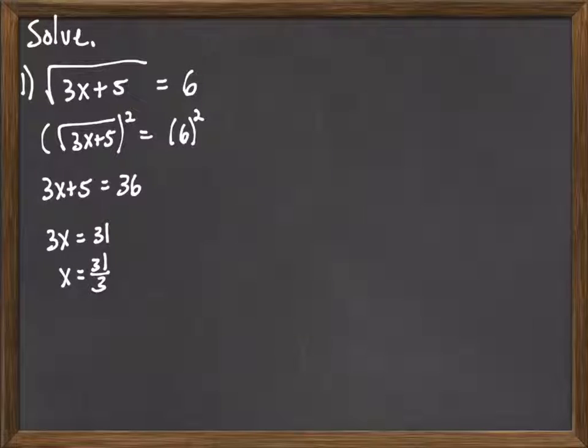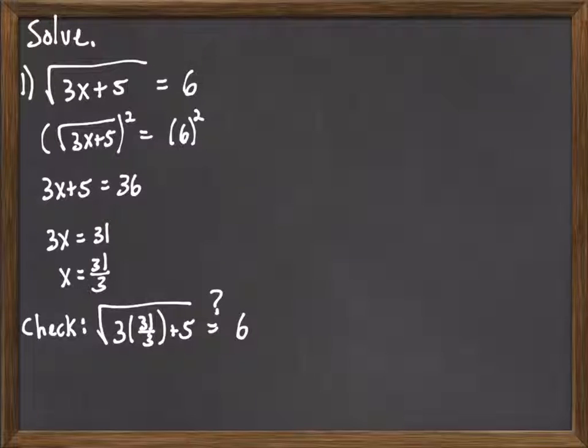But because we squared both sides, we do need to check the solution. So we check by taking that answer, plugging it back into the original equation, and then we simplify each side to see if they are equal.